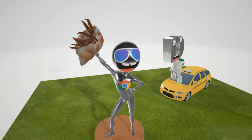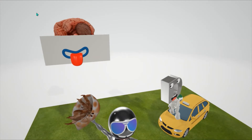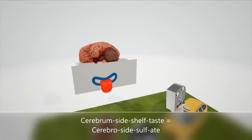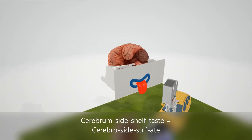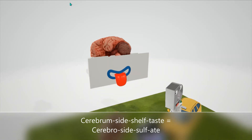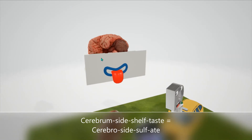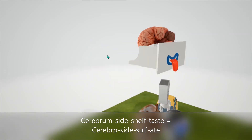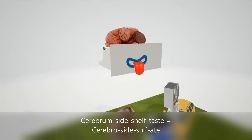This deficiency in arylsulfatase A leads to an increase in cerebroside sulfate, represented here by the cerebrum on its side — the brain on its side, for cerebrum — on the shelf that can taste. This shelf has a tongue that can taste, for cerebroside sulfate.